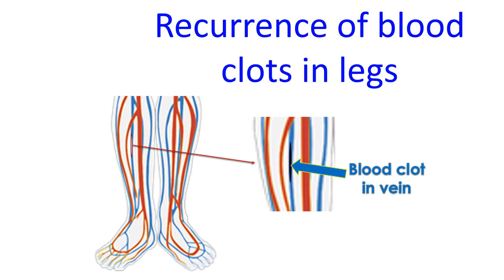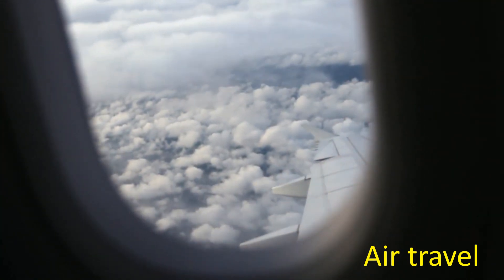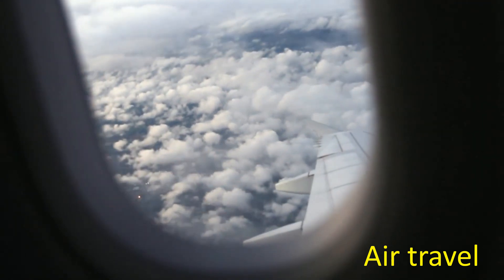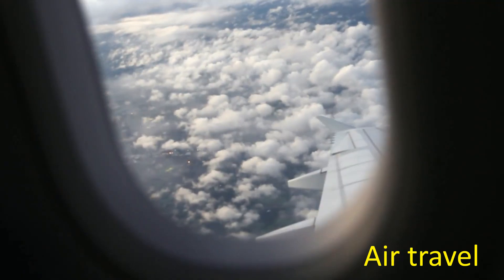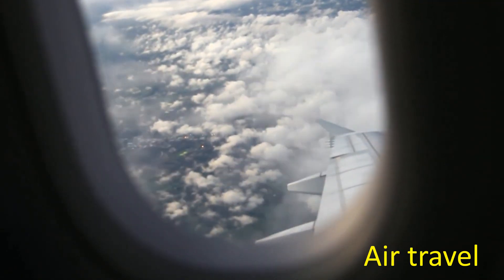Blood clots in the legs can occur due to several reasons discussed earlier. The chance for recurrence depends on whether the original cause is still present or has been resolved. Those who had clots after surgery or delivery can get a recurrence if they undergo the same again, but are otherwise less likely to recur. Similarly, those who had blood clots after a long air travel should take precautions for prevention during their next long-haul flight.